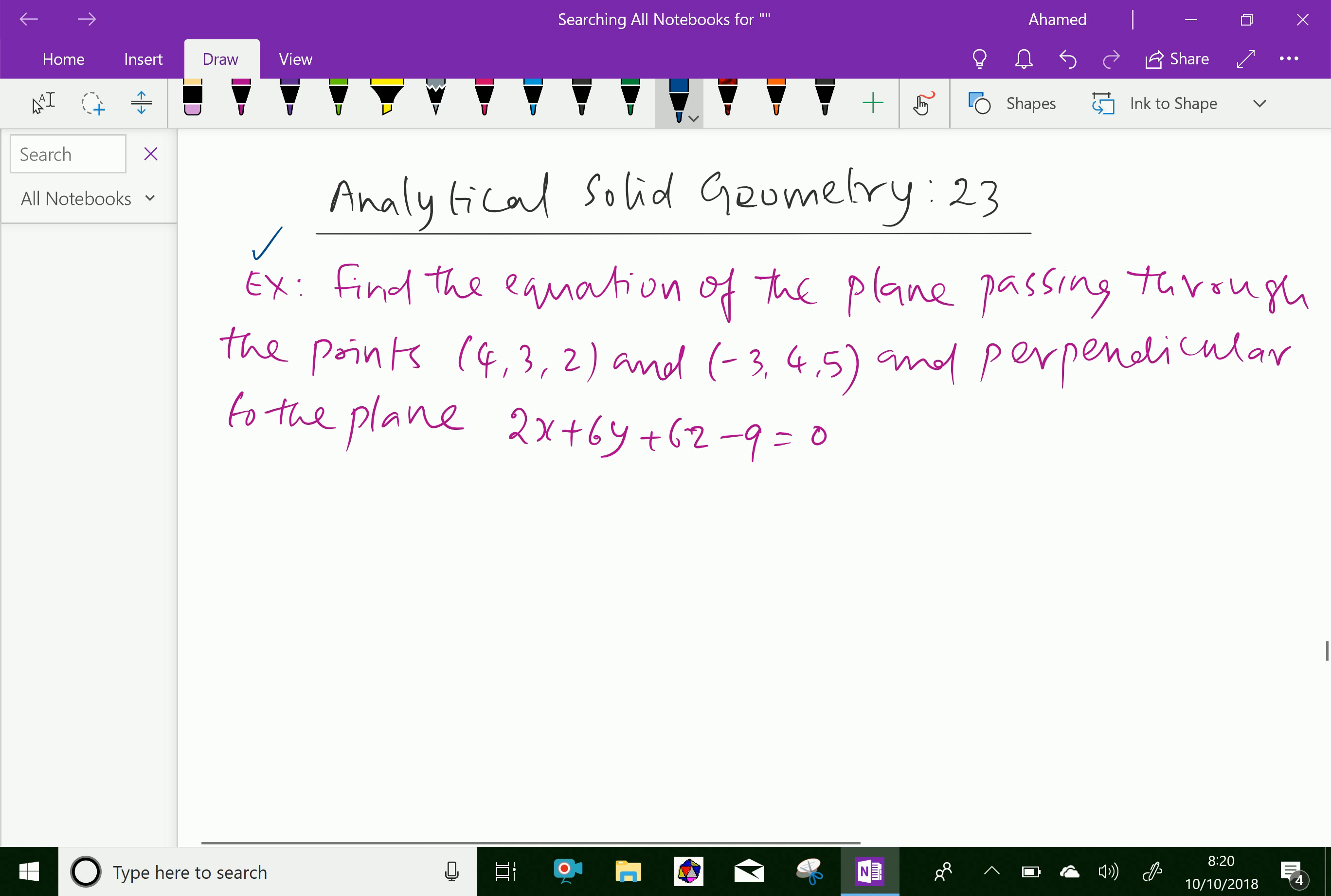Find the equation of the plane passing through the points (4, 3, 2) and (-3, 4, 5) and perpendicular to the plane 2x + 6y + 6z - 9 = 0.